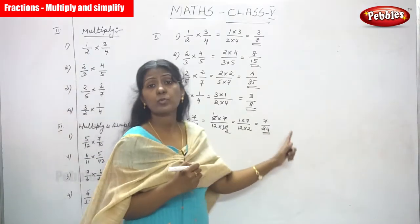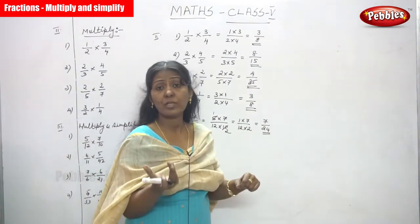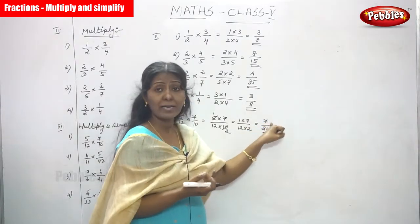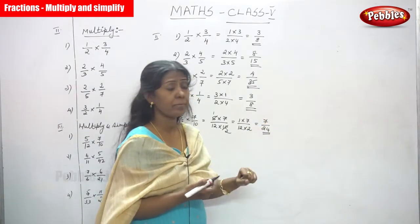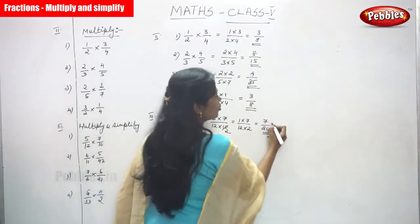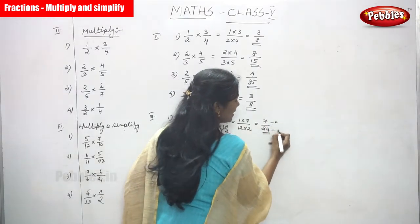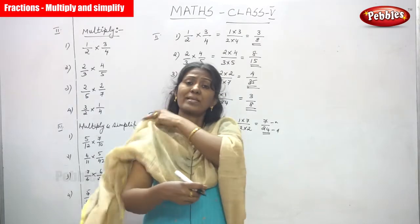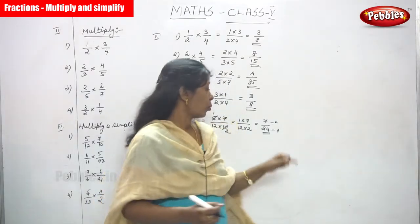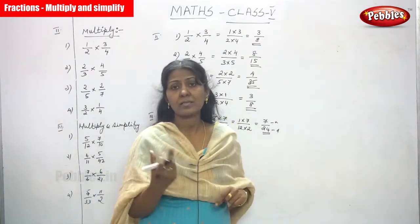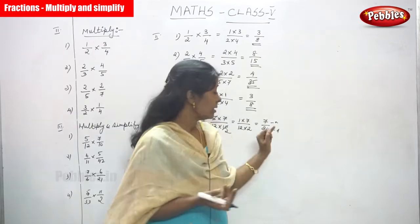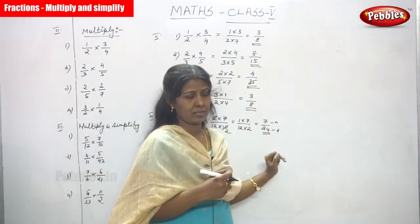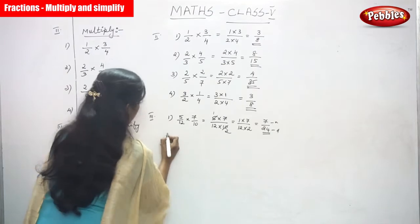Now you can't simplify further because this is already the lowest term. The numerator 7 is an odd number and the denominator 24 is an even number — you can't simplify the term. So 7/24 is the very lowest term and the final answer for this question.